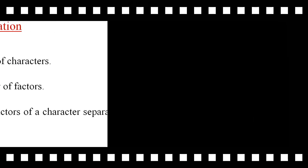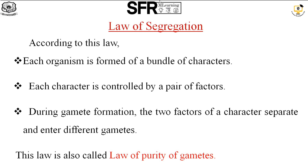The third law is the law of segregation. Each character is controlled by a set of pairs — a pair of chromosomes, a pair of factors. A factor is a gene, so each character is controlled by a pair of genes.